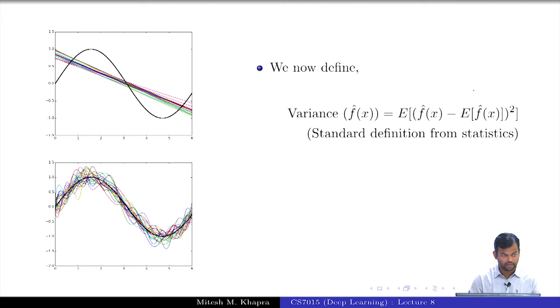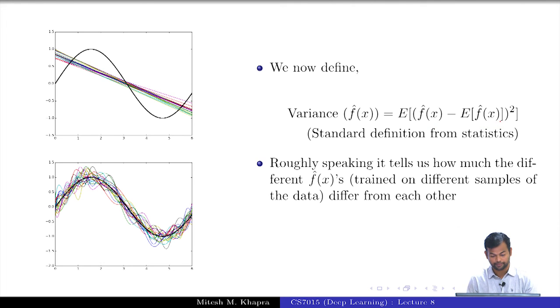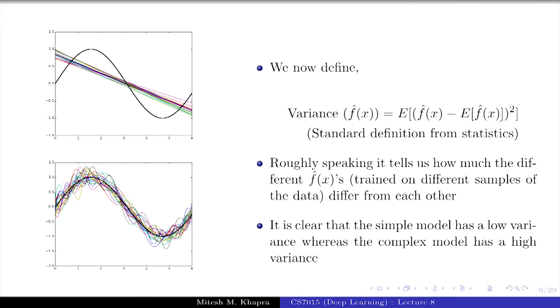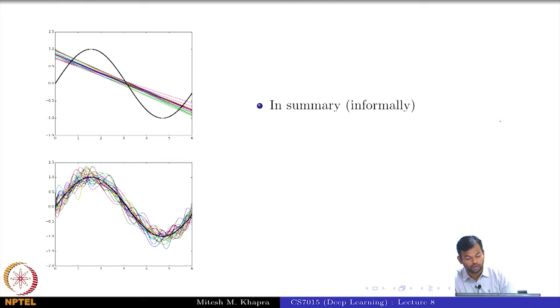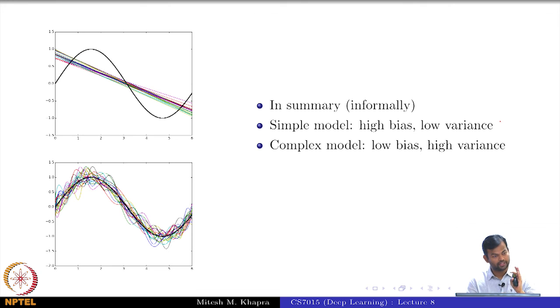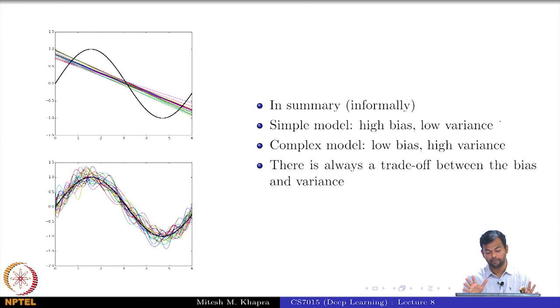Now let us define another quantity which is variance. Everyone knows what variance is. This is one of the functions that I have learned. This is the average of that function and the variance tells me the spread. Based on the figures that you have seen, can you tell me what would happen for the simple model? Low variance, because all these models were very close to each other. There was not much spread in the models. What about the complex model? High variance. All these models were very far from each other. The spread was very high. Roughly speaking it tells us how much the different f(x) that you are learning, how different are they from the average f(x).